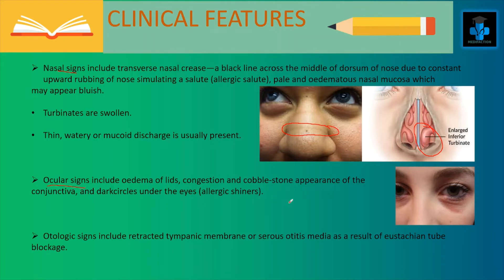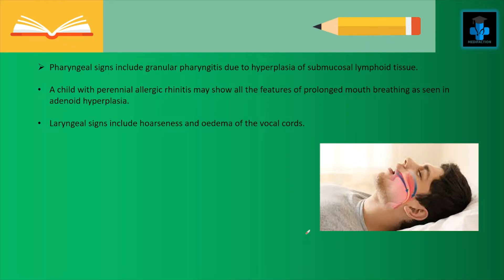The ocular signs include edema of the lids, congestion and cobblestone appearance of the conjunctiva, and dark circles under the eyes called allergic shiners. Otologic signs include retracted tympanic membrane or serous otitis media as a result of Eustachian tube blockage. Pharyngeal signs include granular pharyngitis due to hyperplasia of submucosal lymphoid tissue. A child with perennial allergic rhinitis may show features of prolonged mouth breathing as seen in adenoid hyperplasia. Laryngeal signs include hoarseness and edema of the vocal cords.